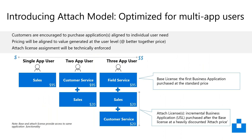The base app for Sales is $95. The way this now works is you add on each additional feature you require. So if you purchase Sales and also require Customer Service, you purchase a base license of Sales for $95 and then an add-on of Customer Service for $20. If you then require Field Service, you'd add that again at another $20. So if you're only using two apps, you're looking at around the same price as the previous Engagement Plan; however, once you're past two apps, you will be looking at a higher cost than previously.